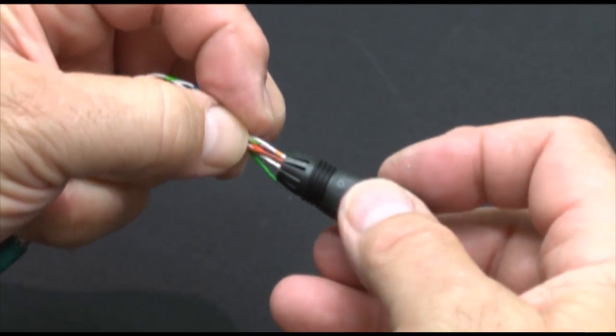Take the piece of conductive foil tape, remove the backing, then wrap it tightly around the exposed braided or foil shielding. Then slide the coupling nut and connector housing over the cable and let it fall back away from the cable end.